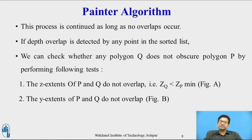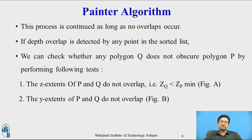In our example, we consider two polygons P and Q. We check whether polygon Q does not obscure polygon P — that is, polygon Q does not overlap polygon P. This can be done by performing the following tests. Test one: the Z-extents of P and Q do not overlap, i.e., ZQ max is less than ZP min.